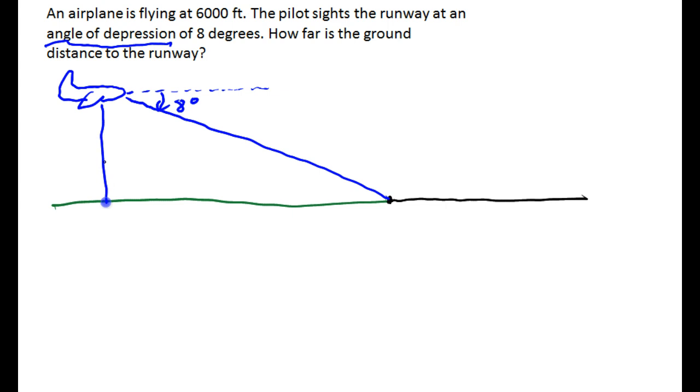The height of the airplane is 6,000 feet. And we want to know how far is the ground distance. Well, you may have noticed that the ground is also horizontal, so these are alternate interior angles. So that's an 8 degree angle right there.